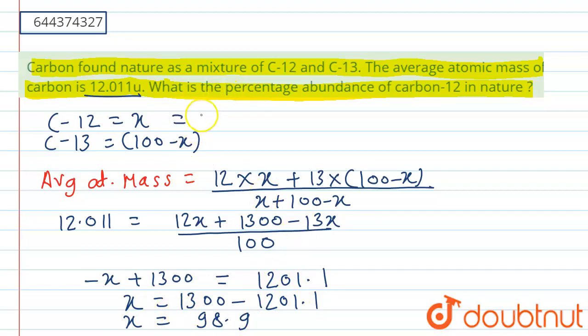The percentage abundance of C-12 carbon. That is, it has a percentage abundance of 98.9 percent. And basically, if we find the percentage abundance of carbon-13, we have to subtract this value from 100, that is 98.9, which gives